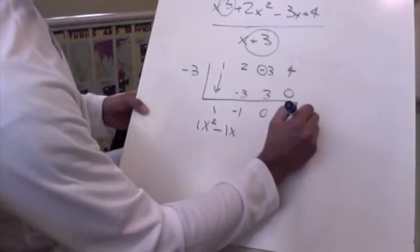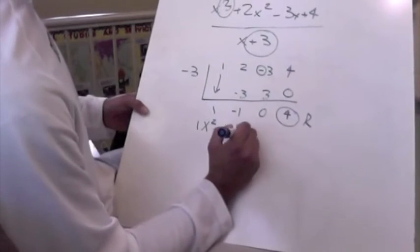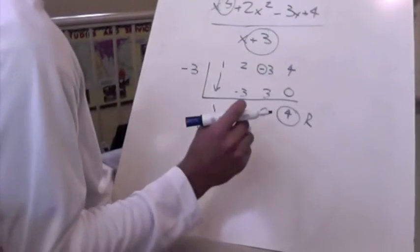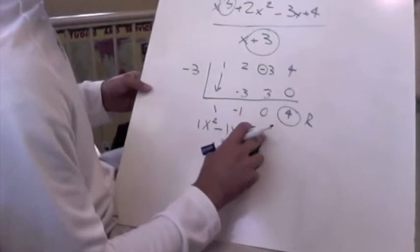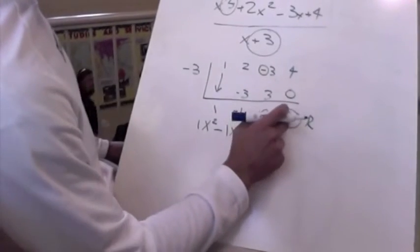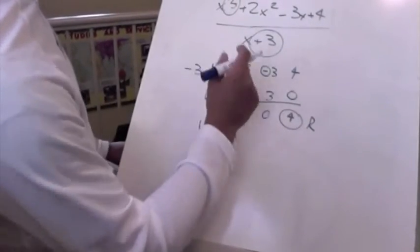And then our last number here is our remainder. This is really important because we can't say plus 4. That's incorrect. We have to skip the 0 and be sure to skip the 0. And then we're going to put this, our remainder, over our x plus 3.